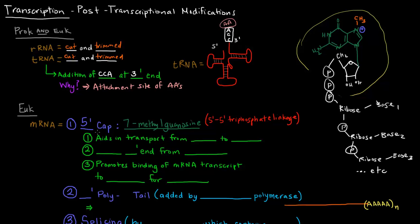What is the purpose of this 5' cap? Well, it does a few things. The first is that it aids in transport from the nucleus to the cytoplasm, or the cytosol. That's important, because in eukaryotes, transcription occurs in the nucleus. Another thing that it does is that it protects the 5' end from degradation by nucleases.